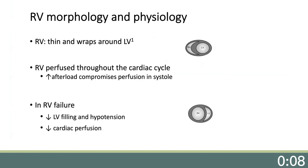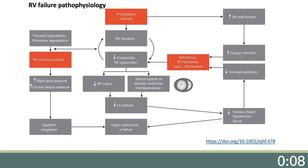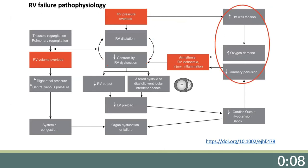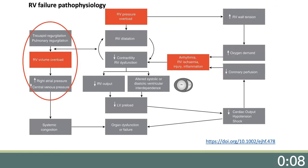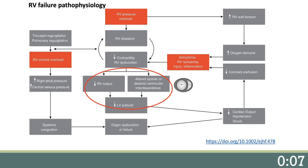A failing RV reduces LV filling and causes hypotension. There is reduced cardiac perfusion, coronary ischemia, and arrhythmia. This figure summarizes the pathophysiology of RV failure. With RV pressure overload comes dilatation and reduced contractility. The increased wall stress augments oxygen demand and decreases coronary perfusion, leading to worsening arrhythmia and ischemia. Tricuspid regurgitation is induced and there is an increase in RA pressure and CVP. There is altered ventricular interdependence, reduced LV filling, reduced cardiac output, and lower mean arterial pressure.